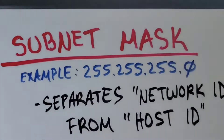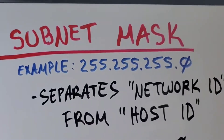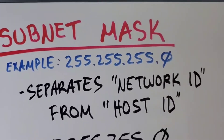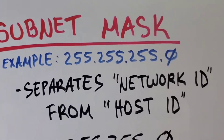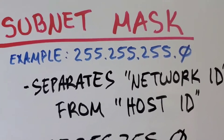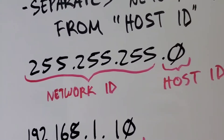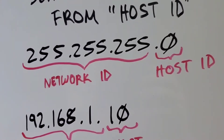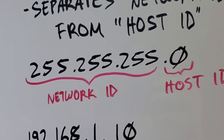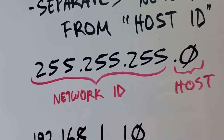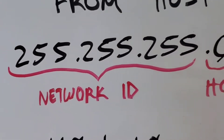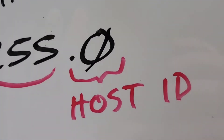The subnet mask, for example, is 255.255.255.0. The purpose of the subnet mask is to separate your network ID from your host ID in the IP address. If you have a subnet mask of 255.255.255.0, the first three octets with the 255 in them represent the network ID, and then the zero represents the host ID.